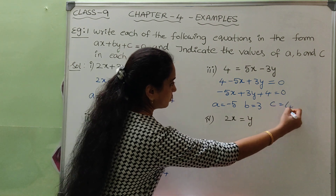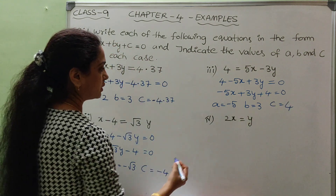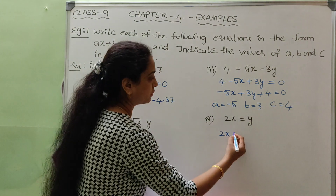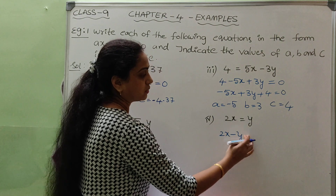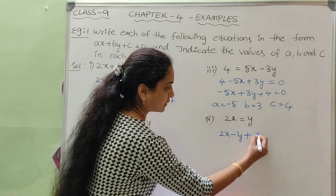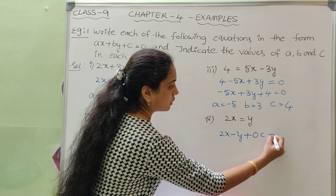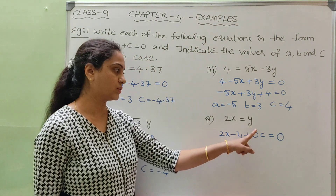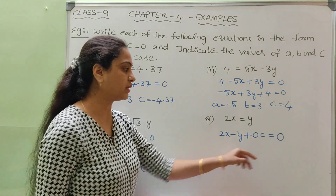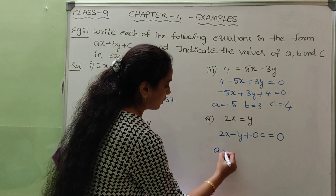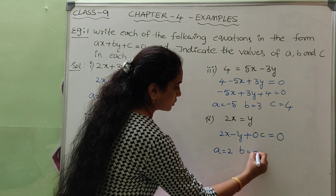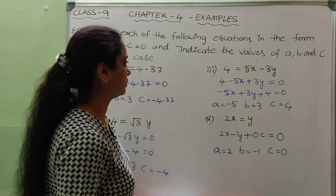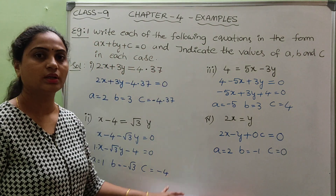Last question: 2x equals to y. The right side y will come to the left side, so 2x minus y equals to 0. The constant value is nothing, so c equals to 0 — because they have only given x and y values, no constant term. Therefore a equals to 2, b equals to minus 1, c equals to 0. First example is over, thank you.